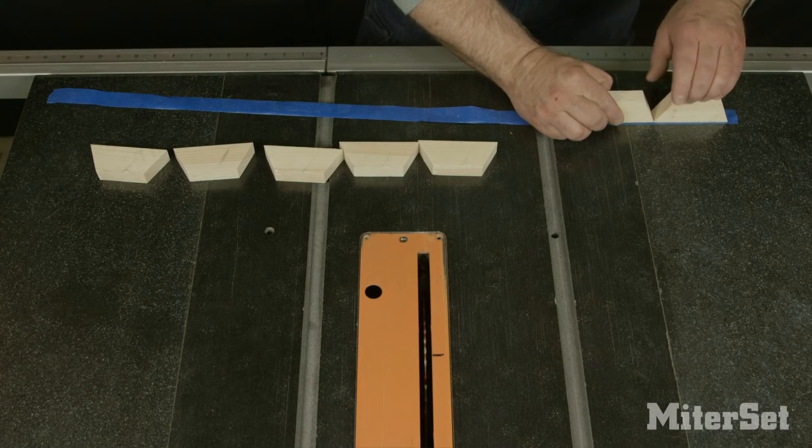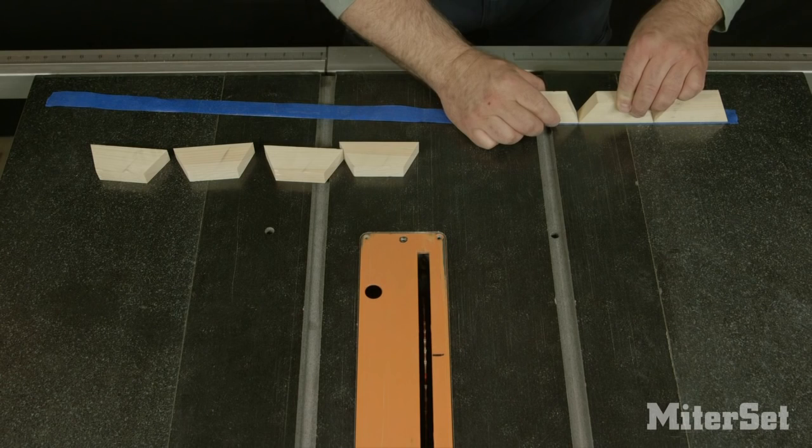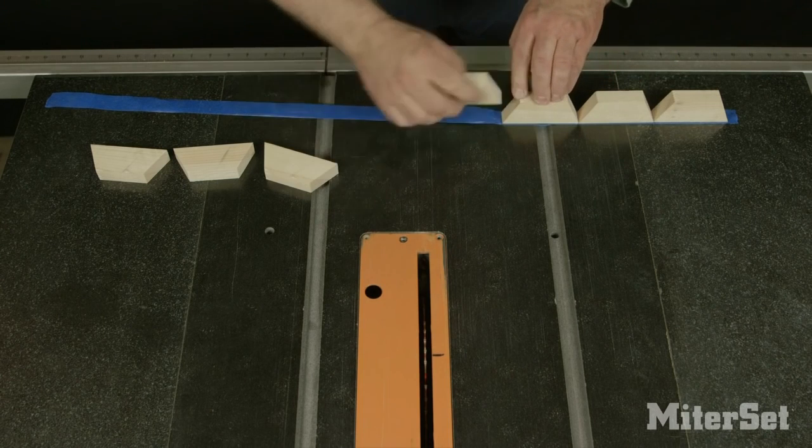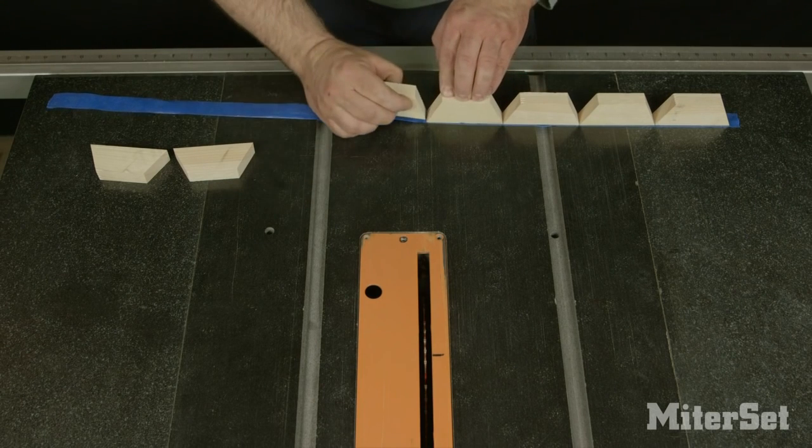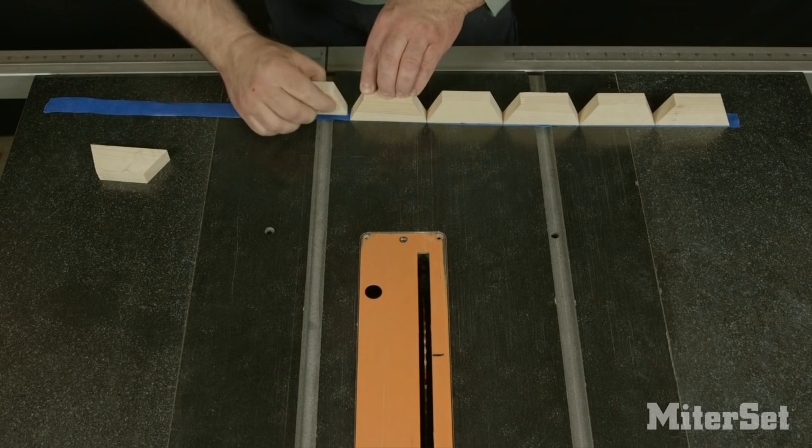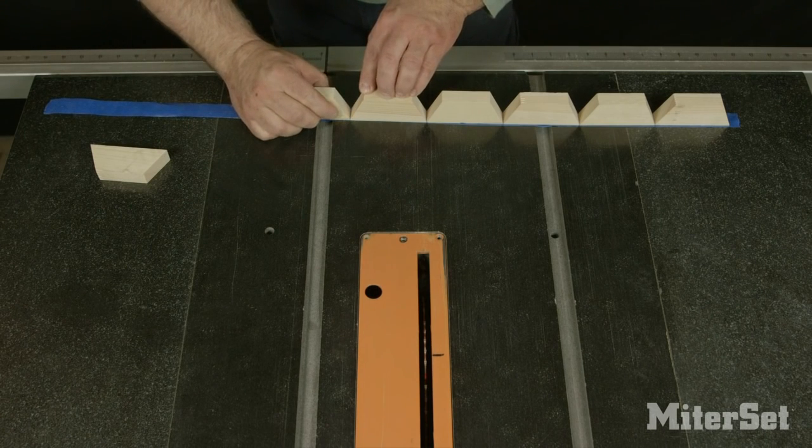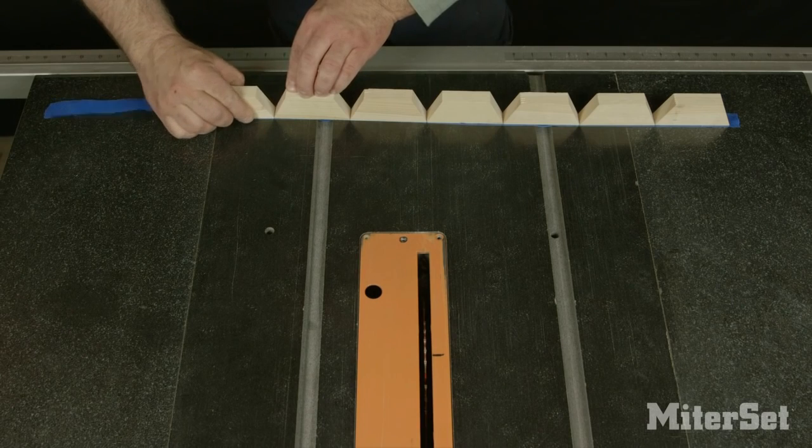As I made the cuts I took care to place the segments in the order that I had cut them, and as I place them on the tape I make sure that the segments are laid out in order. This material is common pine I purchased from a big box store. It has not been jointed or planed and it had a good deal of crown along its eight foot length. This will be a good test of MiterSet's accuracy.